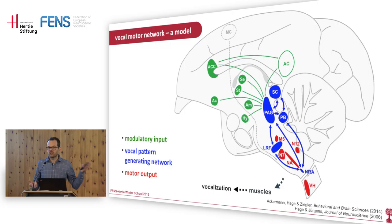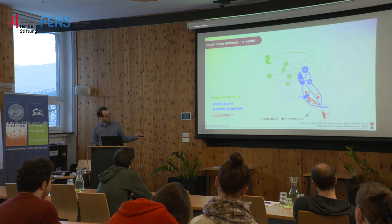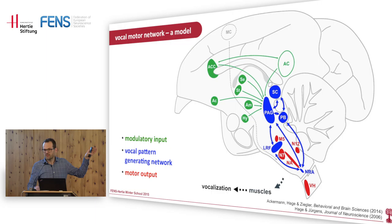Another important structure is the lateral reticular formation, which seems to encompass the vocal pattern generator itself — the structure that coordinates the actual vocal pattern we hear in spectrograms. It has connections to all motor neuron pools involved in vocalization. Even though this is not human speech, it is still a very complex vocal motor pattern: laryngeal muscles, respiratory muscles, jaw muscles, and lip and tongue muscles all must be orchestrated together properly.